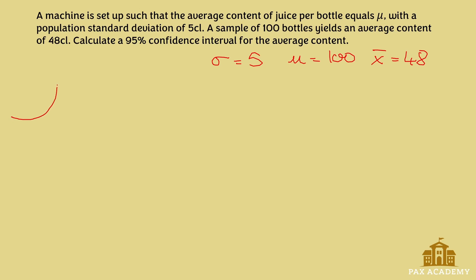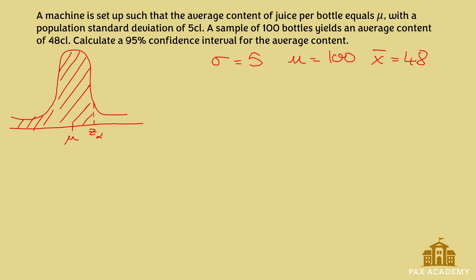Here we're dealing with a normal distribution where the population mean is in the middle. We want to find the z-value, which is to the right of this population mean. The way we find the area to the left is we take the confidence level in decimal places plus 1 divided by 2. The confidence level in our case is 95%, so we do 0.95 plus 1 divided by 2, which gives us 0.975.